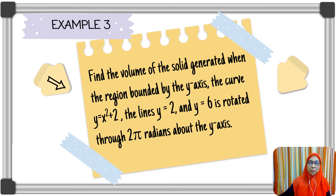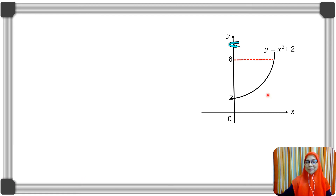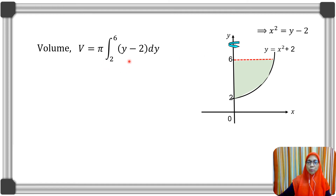Example 3: find the volume of the solid generated when the region bounded by the y-axis, the curve y = x² + 2, and the lines y = 2 and y = 6 is rotated through 2π radians about the y-axis. The region bounded by the curve y = x² + 2, the y-axis, and the line y = 6 is rotated through 2π radians about the y-axis. We must convert x squared in terms of y, so x² = y - 2. The volume of revolution is π times the integral of (y - 2) with respect to y from y = 2 to y = 6.